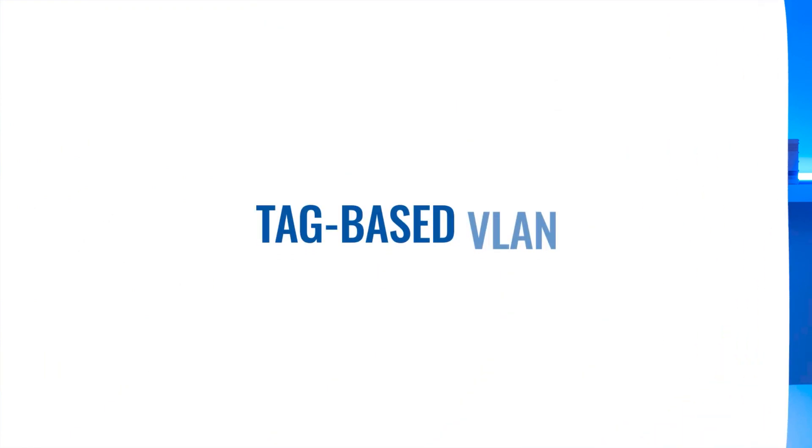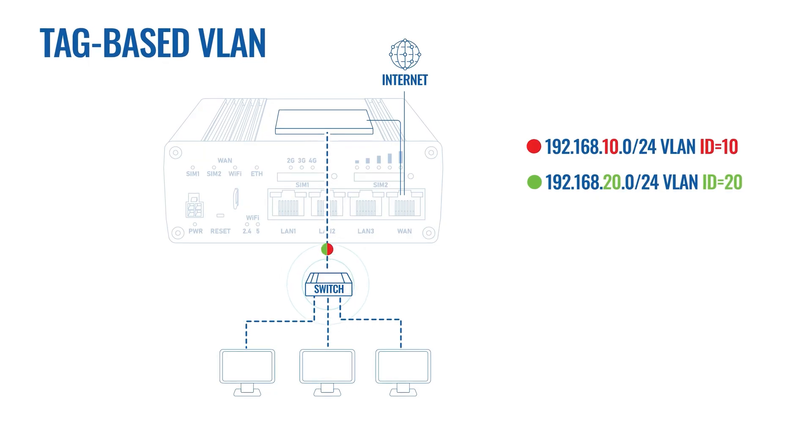But there is another way to create two separate networks for both teams — this calls for tag-based VLAN. While port-based VLAN requires physical connectivity, tag-based VLAN doesn't. It relies on virtual IDs.